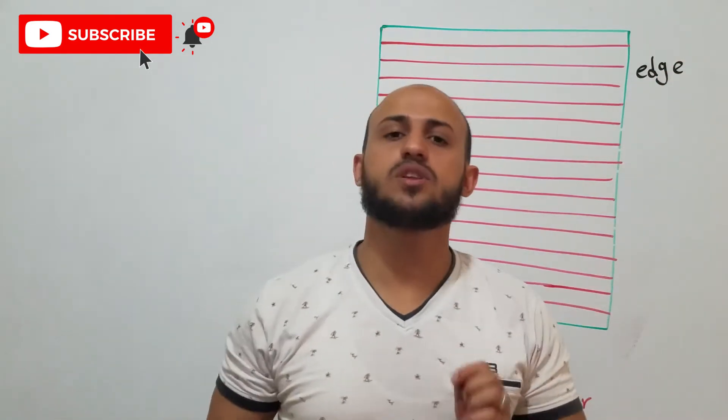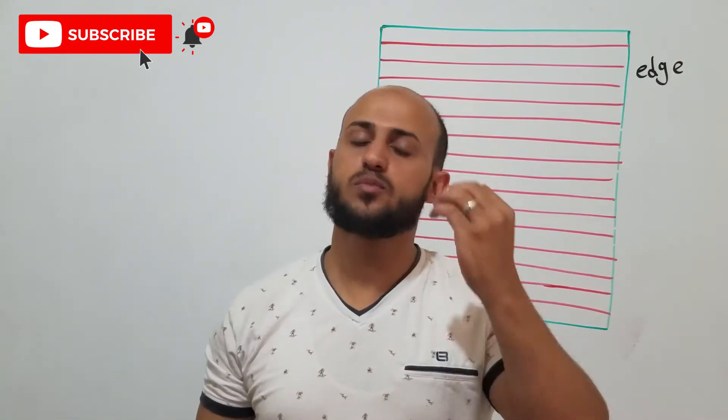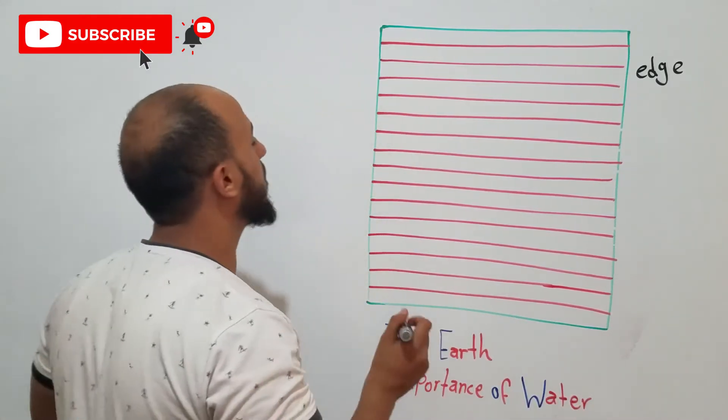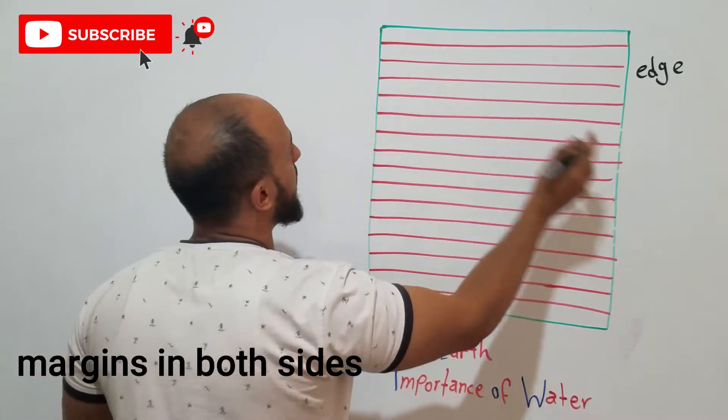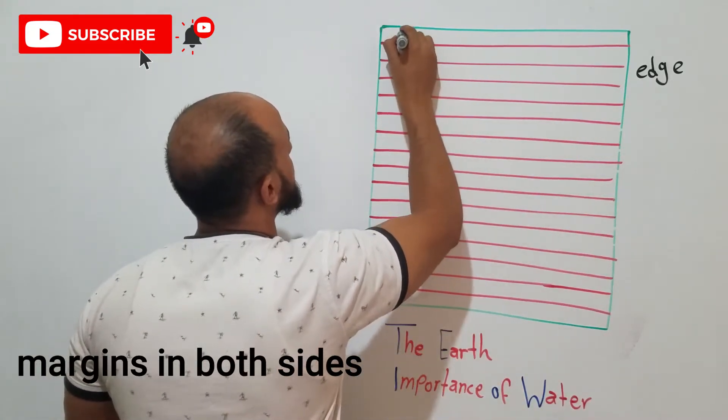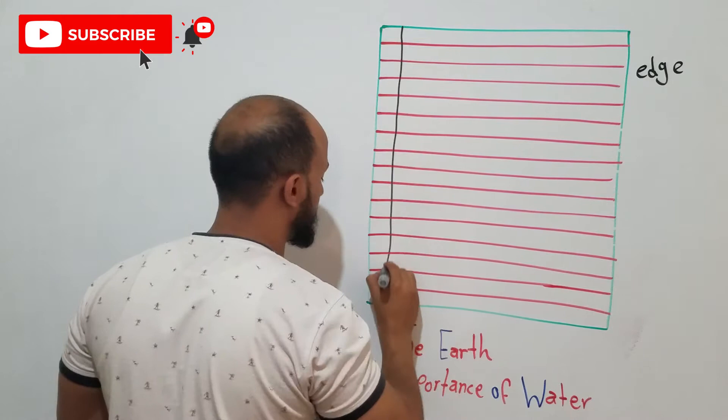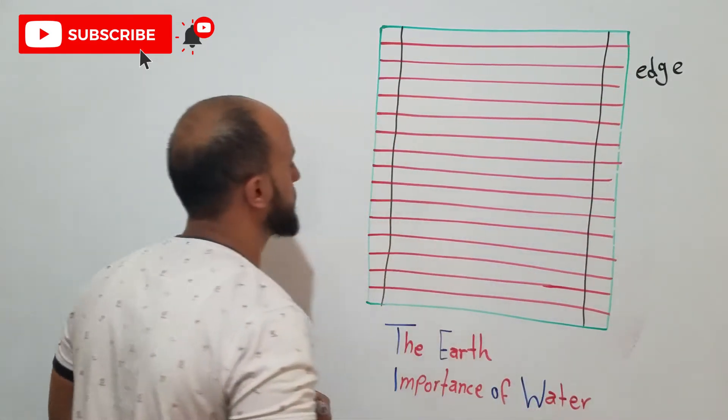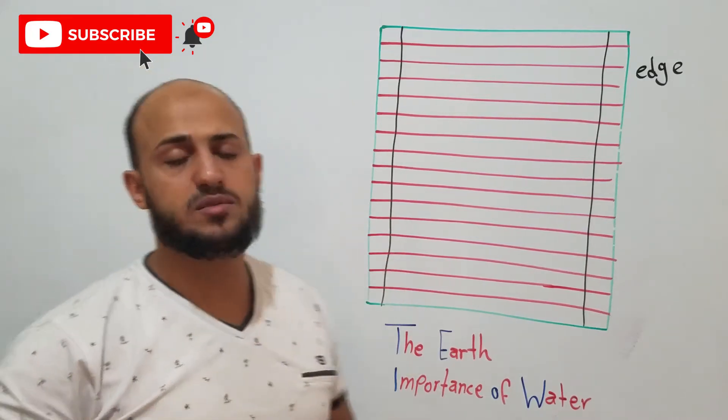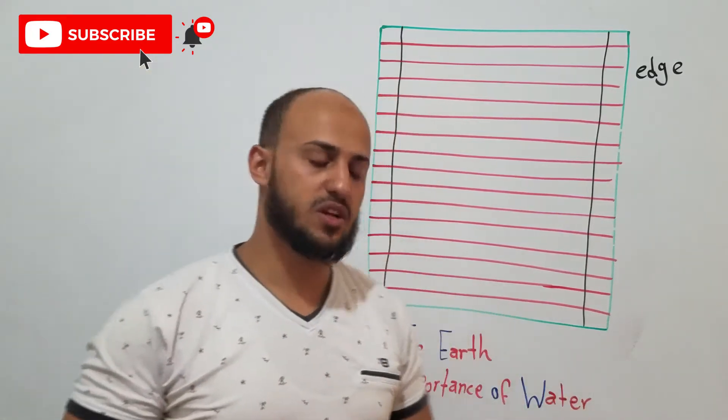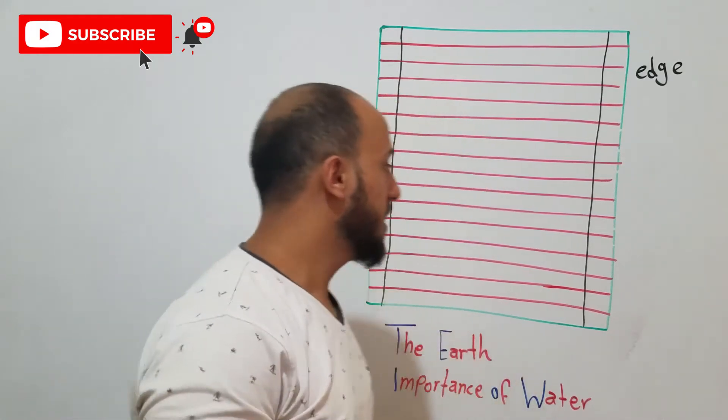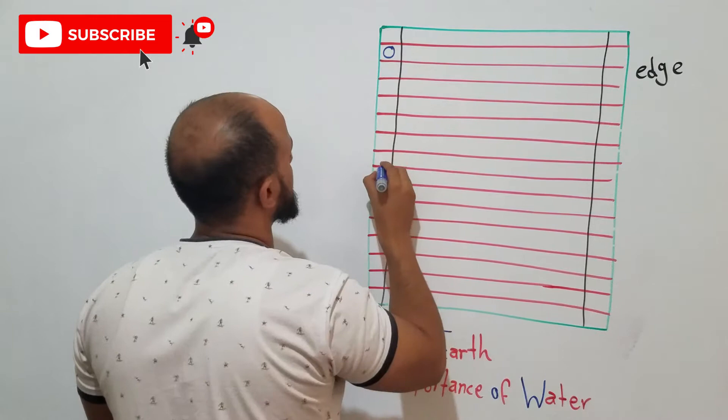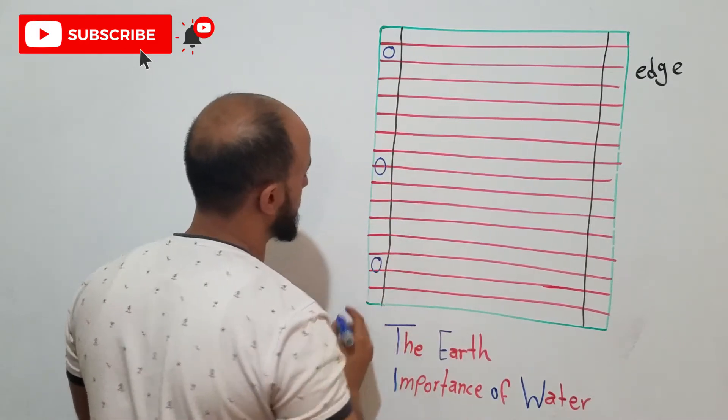Before you start writing, you need to do two things to prepare your paper. The first thing is, you make margins, margin here and here. So this is margin, this is a margin, and this is the second one.